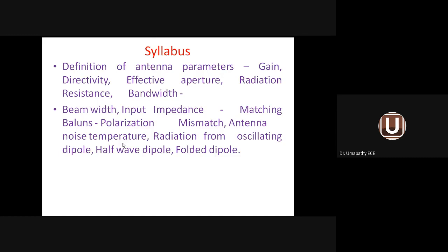Radiation from oscillating dipole: oscillating dipole, alternating current element, short dipole, and Hertzian dipole all mean the same. The oscillating dipole is a theoretical antenna located at the center of a spherical coordinate system. Standing at a far point P, we calculate electric field strength E_θ, E_r and magnetic field strength H_φ.